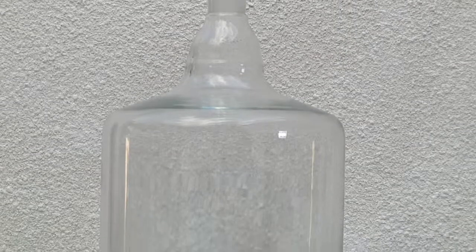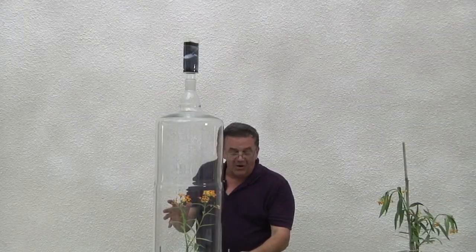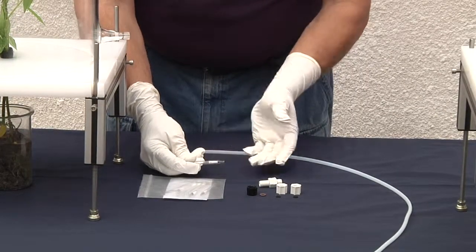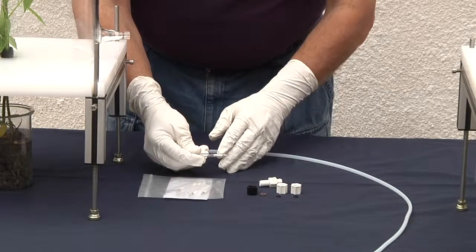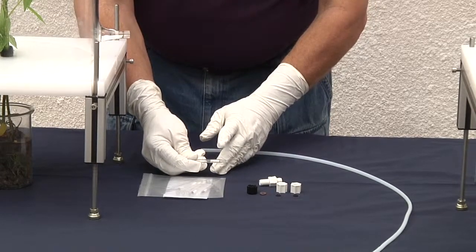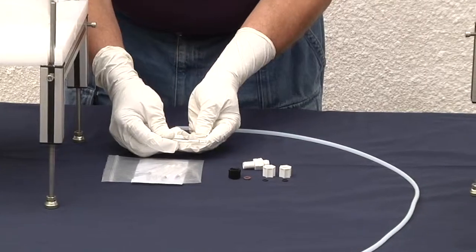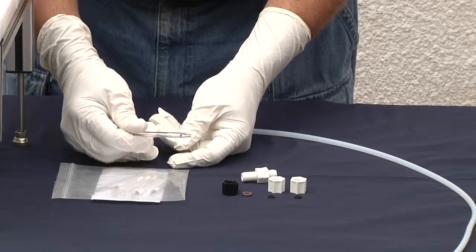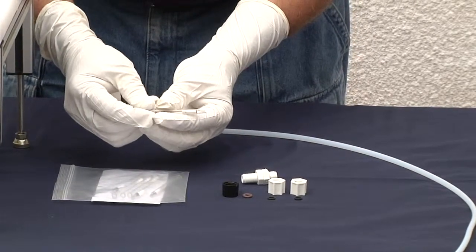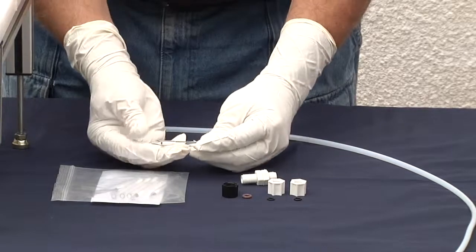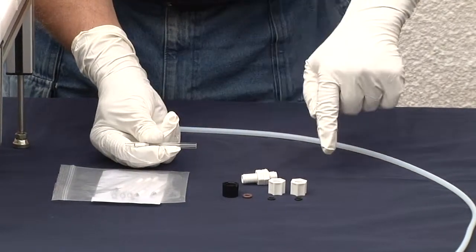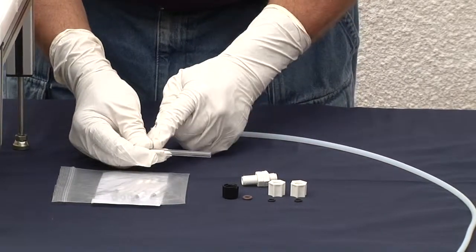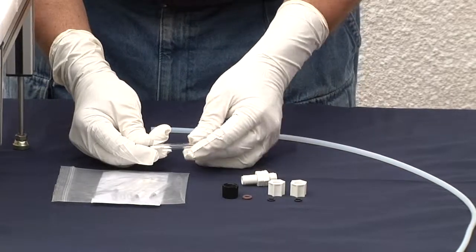At this point we're ready to attach our volatile collection trap. Our volatile collection trap or VCT is designed where we have a stainless steel screen that is fused into the glass, then our absorbent, some glass wool packing, and then a retaining ring. The normal way for installing the VCT was for the tip to go into our chamber and the air to flow through the tube. Sometimes we've had problems if pressure builds up too high that our retaining ring comes loose and we lose our absorbent.